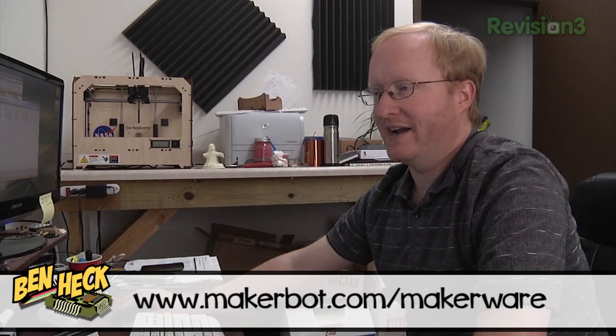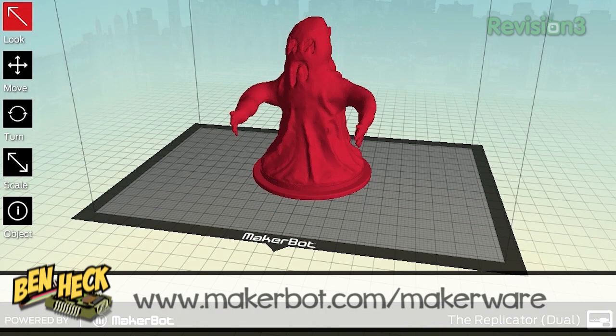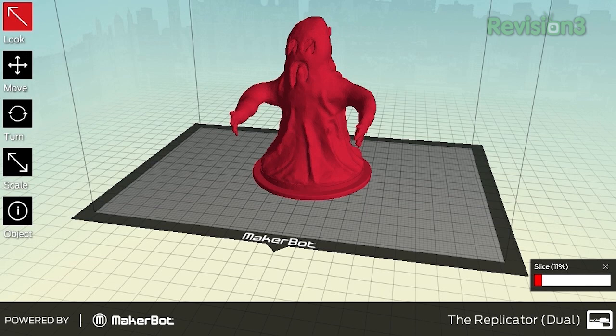Now let's try it with MakerWare. MakerWare is a program made by the MakerBot guys, and it's written in C++, so it has a much faster slicer. So when we go to slice the same object in this program, it still takes a while, but it goes through it much faster than the Python language did. Again, this is an example of how a compiled language is more efficient than an interpreted one.